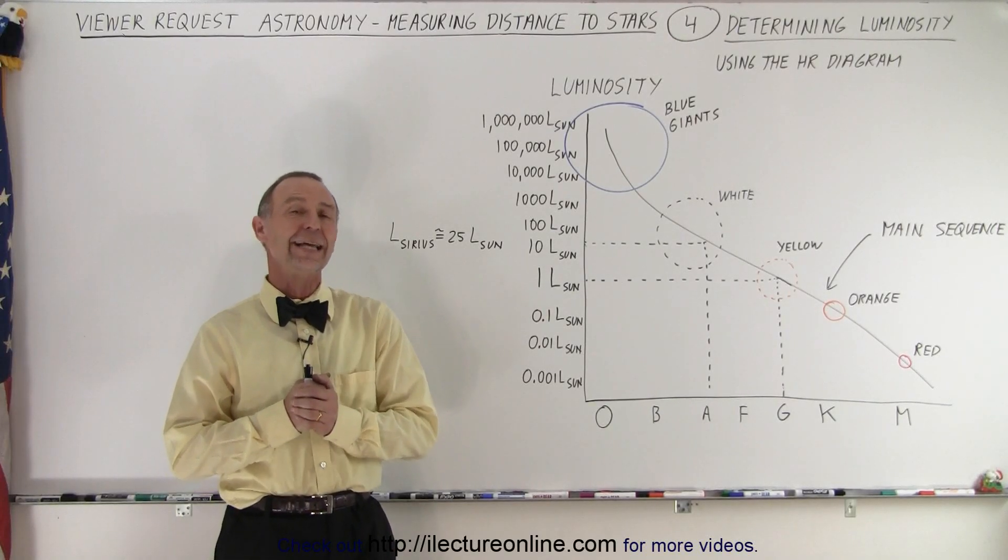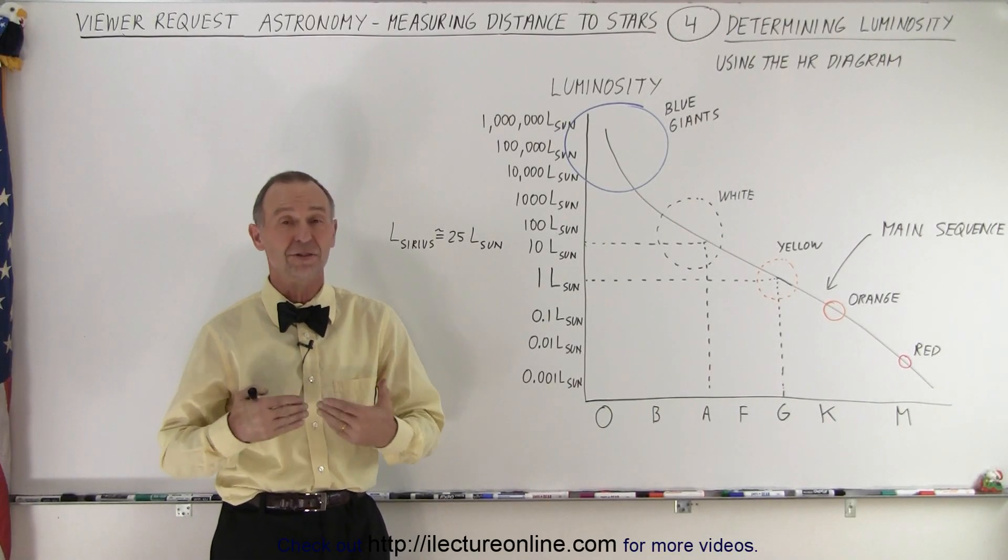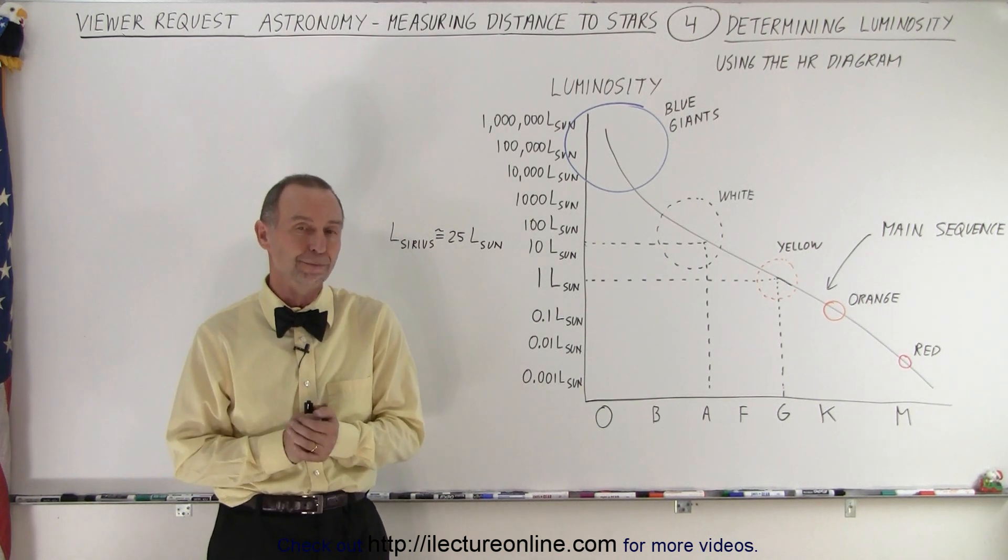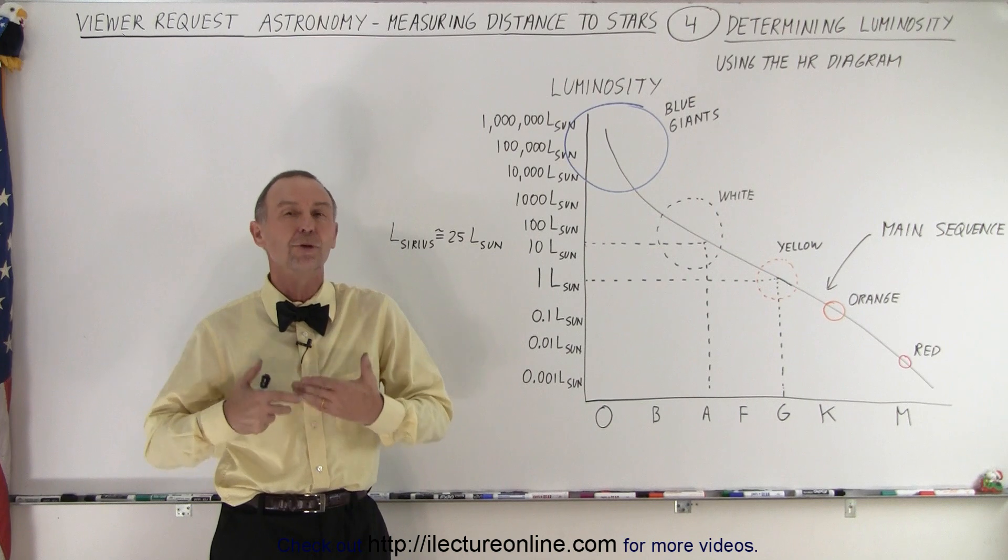Welcome to our lecture online. Next we need to figure out the luminosity of the star in order to be able to calculate the absolute magnitude of a star. So how do we determine the luminosity?